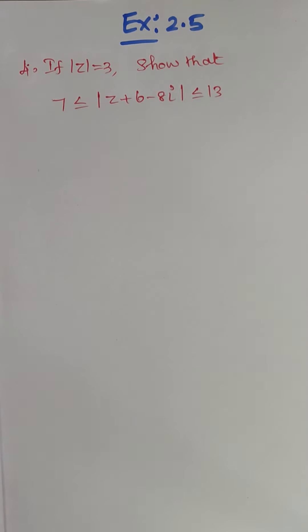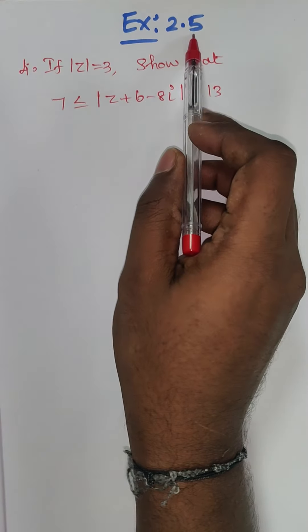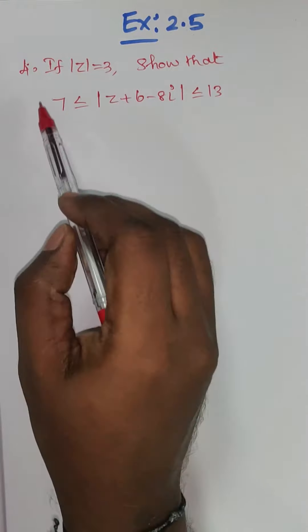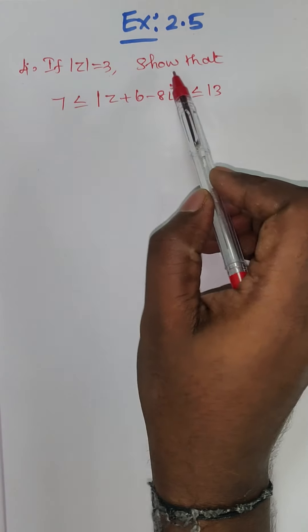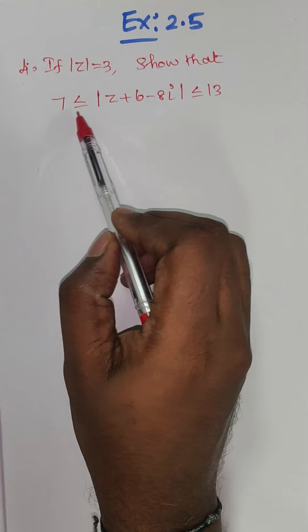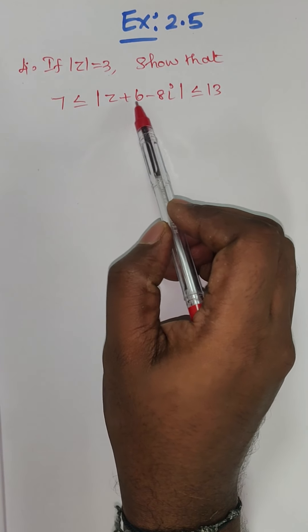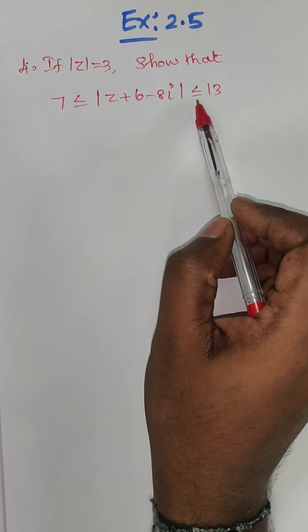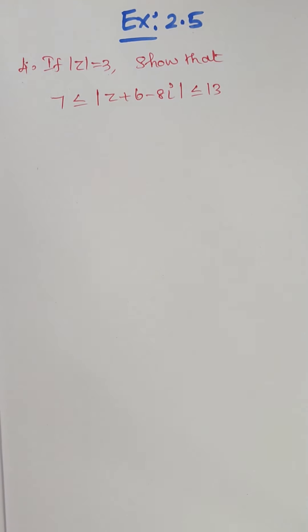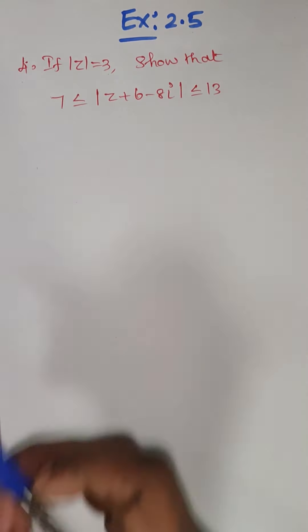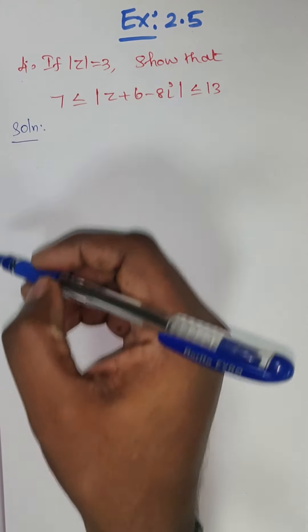Good morning students. Today we are going to discuss Exercise 2.5, Question Number 4: if mod of z equals 3, show that 7 is less than or equal to mod of z plus 6 minus 8i, which is less than or equal to 13. Before that, we recall the property we discussed.